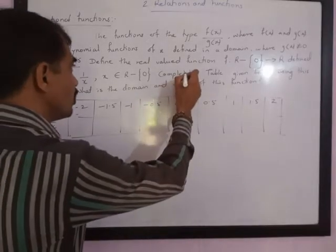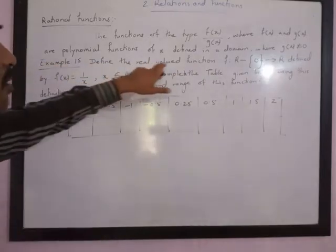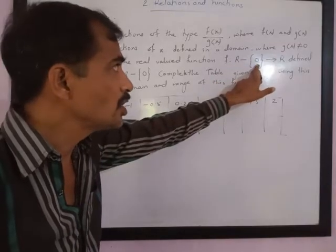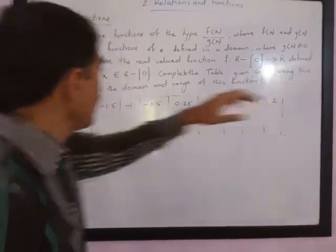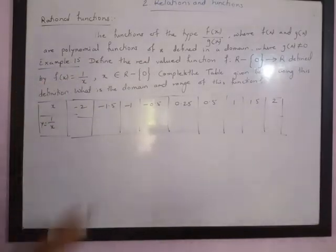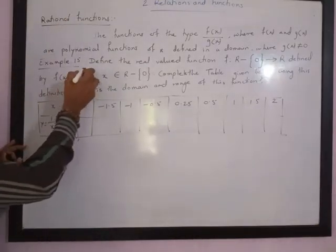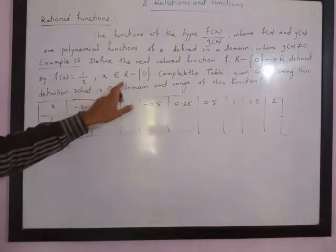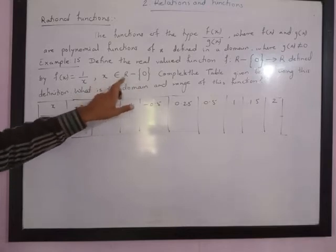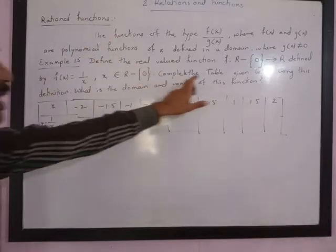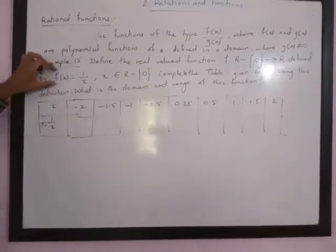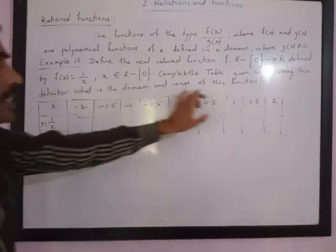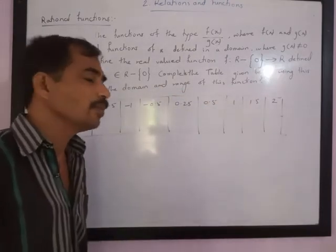Next is example number 15. Define the real valued function from real numbers excluding 0 to real numbers, defined by f(x) = 1 upon x. So we are given a rational function in the form numerator upon denominator, that is 1 upon x, where x belongs to real numbers other than 0. Complete the table given below and find the domain and range of this function.